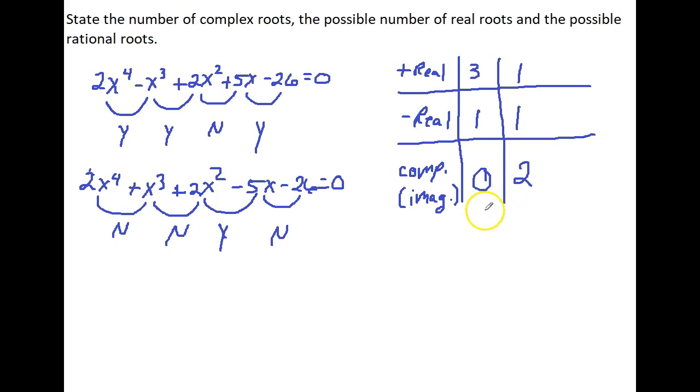Now we're told to find the possible roots. So what does that mean? Means we take factors of the last term over factors of the leading coefficient. So factors of 26 are positive and negative 1, positive and negative 26. Factors of 2 are positive and negative 1, positive and negative 2. So when we put these over 1, we get the whole numbers. We also have positive and negative 13 because 13 times 2 is 26. So that means we also have a positive and negative 2. So those are all of the factors of 26. So 1 times 26, 13 times 2. That's how I got them.